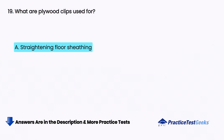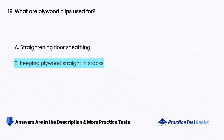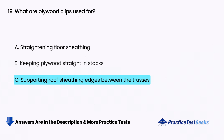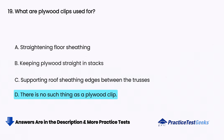What are plywood clips used for? A. Straightening floor sheathing, B. Keeping plywood straight in stacks, C. Supporting roof sheathing edges between the trusses, D. There is no such thing as a plywood clip.